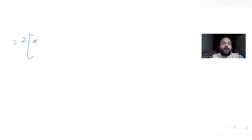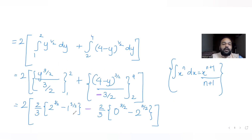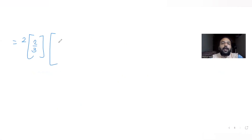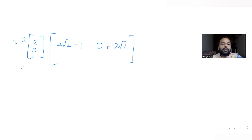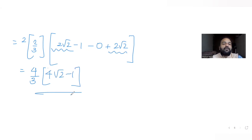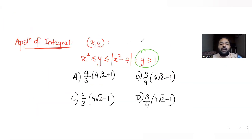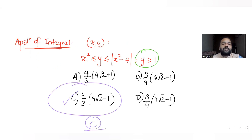Taking 2/3 common from both terms: 2 × (2/3) × [2^(3/2) - 1 + 2^(3/2)] = (4/3)[2·2^(3/2) - 1]. Now 2^(3/2) = 2√2, so 2·2^(3/2) = 4√2. The result is (4/3)(4√2 - 1), which matches option C. So option C is the correct answer for the area of the enclosed region.